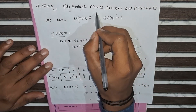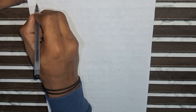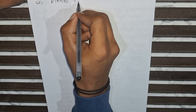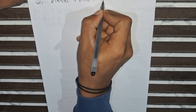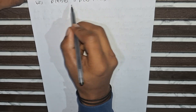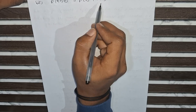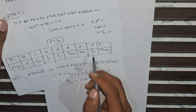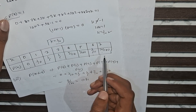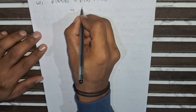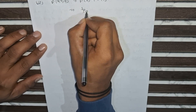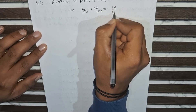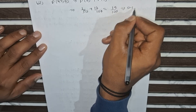Now for P(X ≥ 6). This includes only x = 6 and x = 7. P(6) = 1/50 and P(7) = 17/100. So P(X ≥ 6) = 1/50 + 17/100 = 19/100 = 0.19.